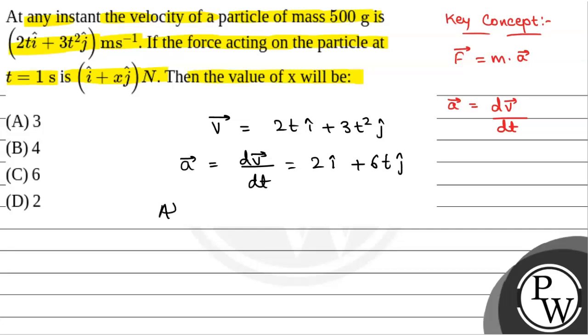Now, at t is equal to 1 second, acceleration of the particle at 1 second that will be equal to, we will just put the value of t at 1. That will be 2 i cap plus 6 j cap. Now, mass of the particle that is given as 0.5 kg because it is 500 gram.